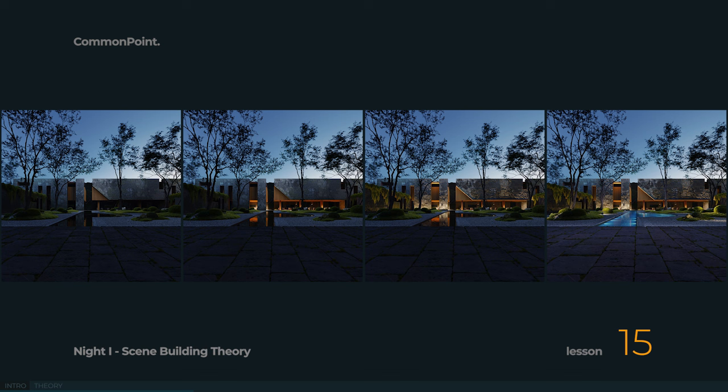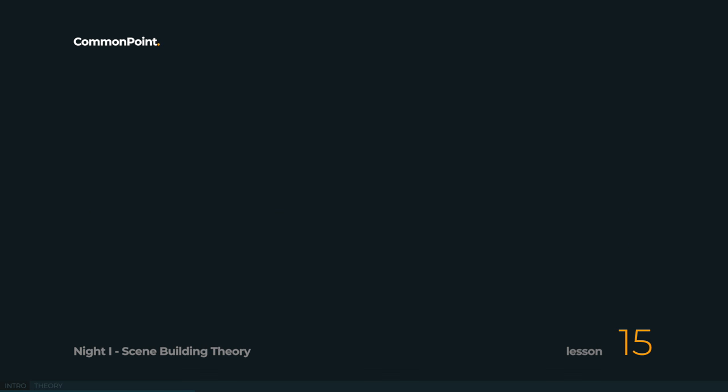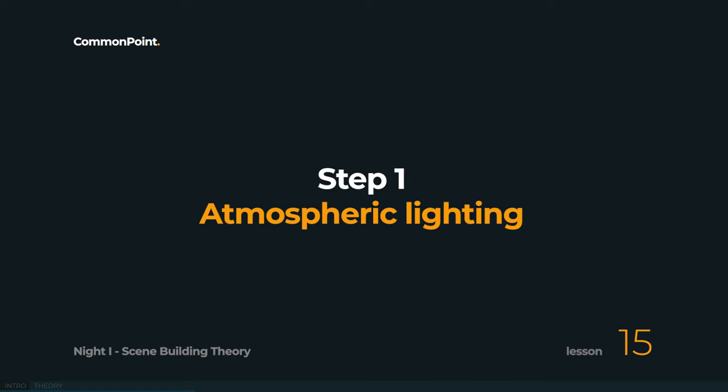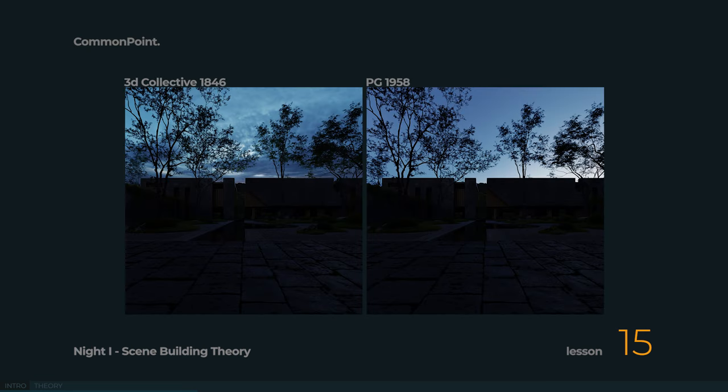Sounds easy, right? So let's go into the details of each step. Let's start with the base. Our first step will be adding atmospheric lighting, which is ambient light. And we need to remember, just like with the overcast, we are setting the base, and later we'll add the lights. So we can't set the base too high. The right level should allow for the shadows to be just readable, so the whole thing will seem far too dark at this stage. We just have to accept it.